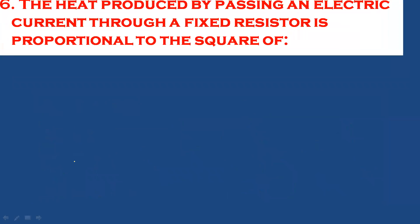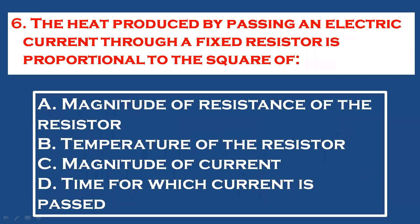Question 6: The heat produced by passing an electric current through a fixed resistor is proportional to the square of the magnitude of the current. Option C is the direct answer.